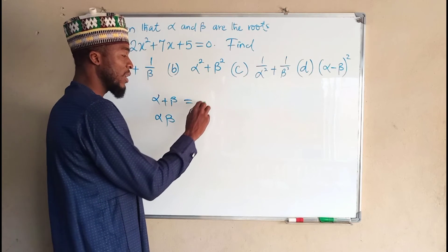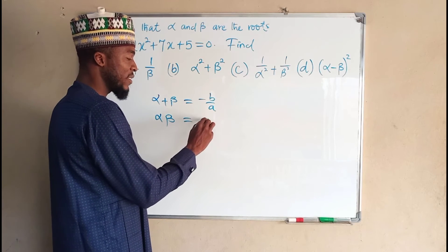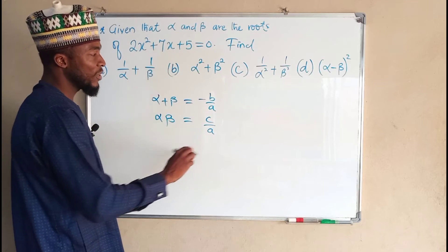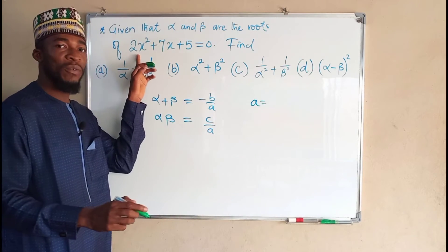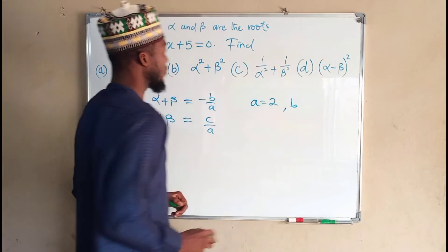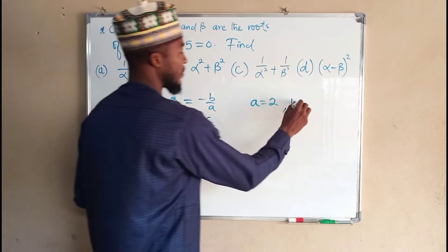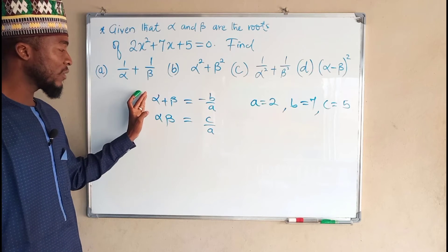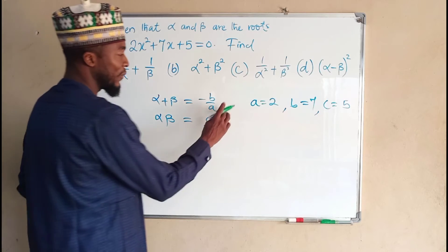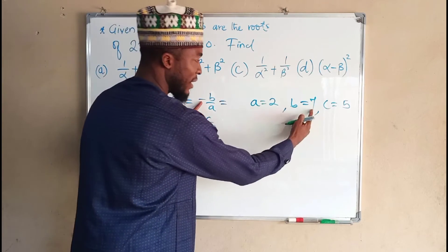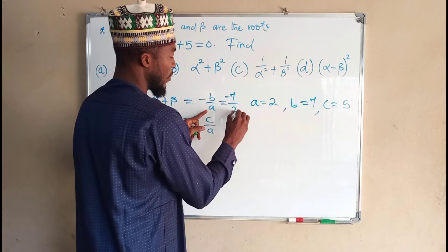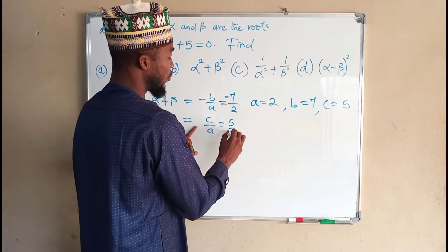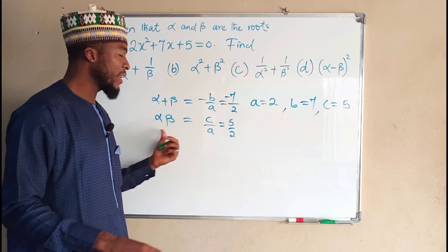For sum of roots it is the same as negative b over a, and for the product it is c over a, where a, b, c are all coefficients of the quadratic equation. For this main quadratic equation, a is the leading coefficient — the coefficient of x squared — which is 2, b is the coefficient of the middle term which is 7, and lastly c is the constant which is 5.